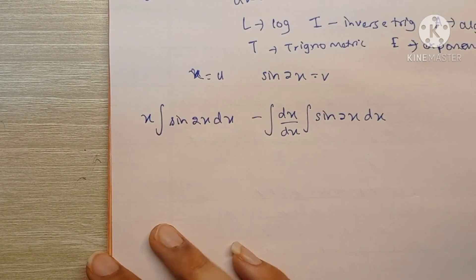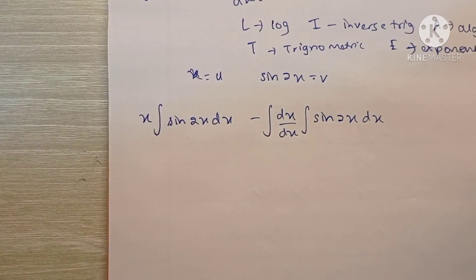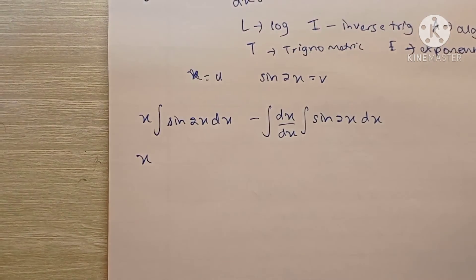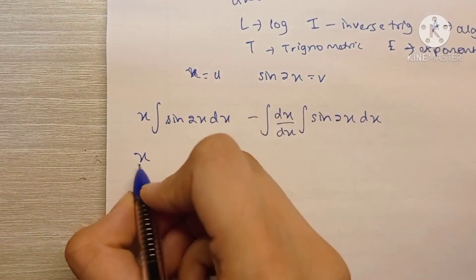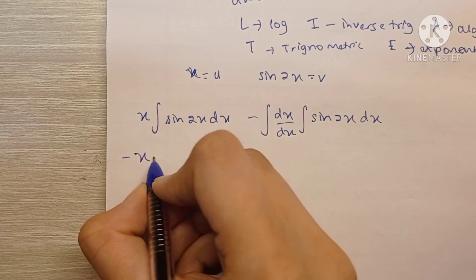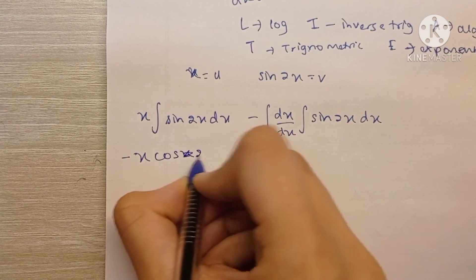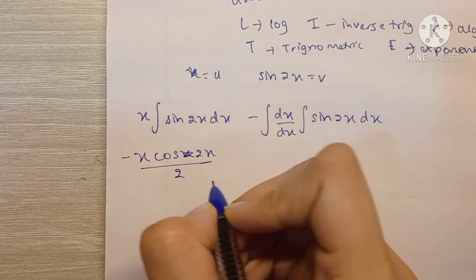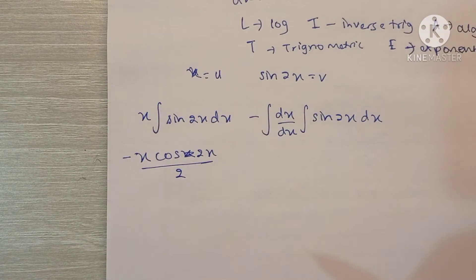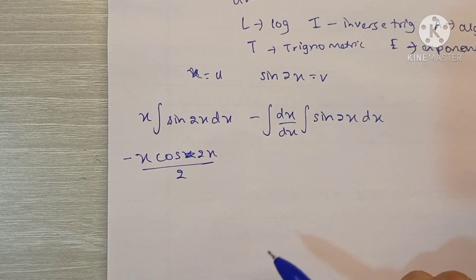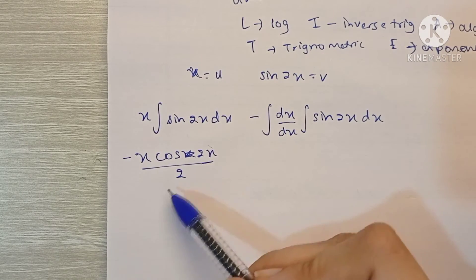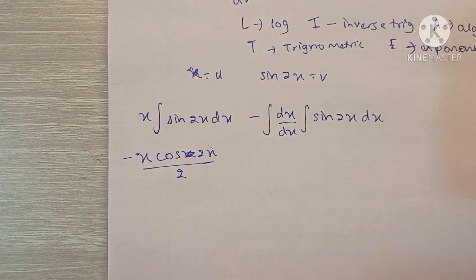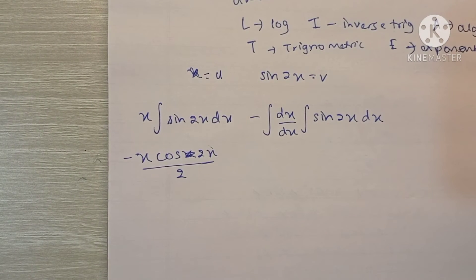So we know that the integration of sin is minus cos. And we are going to keep the coefficient of x in the denominator. So this becomes minus x cos 2x upon 2, because the differentiation of minus cos 2x would be minus sin 2x into 2, because we would differentiate 2x as well. So then the 2 and 2 will get cancelled.